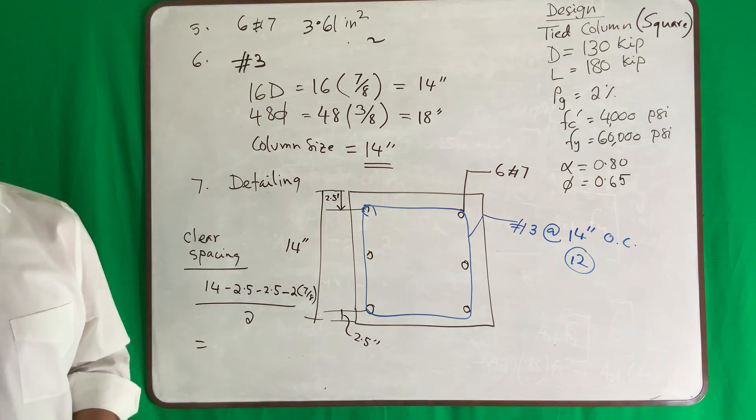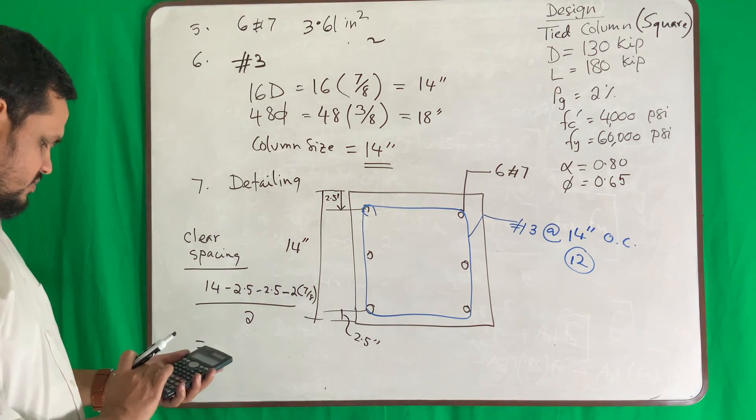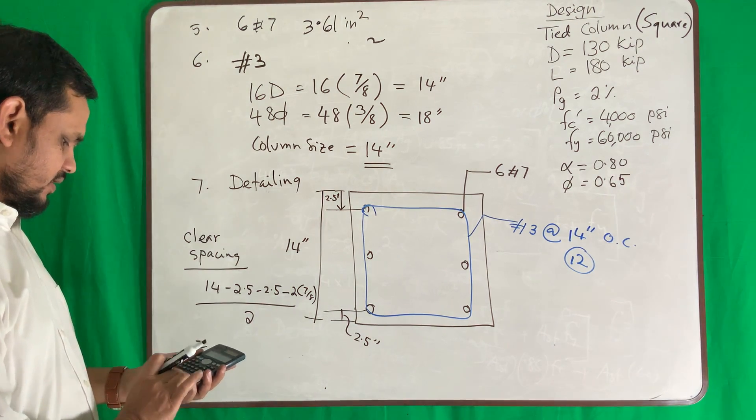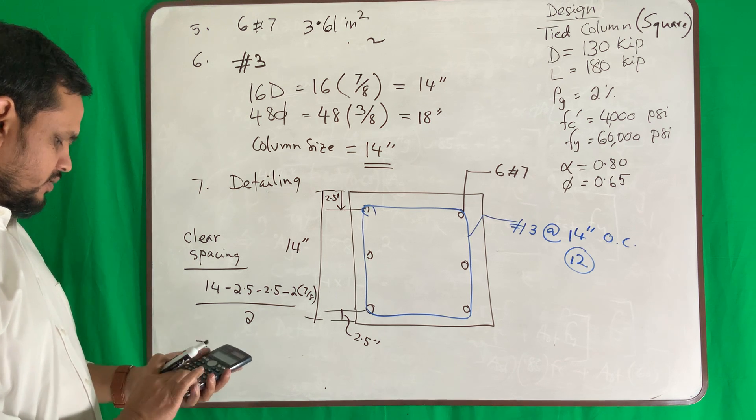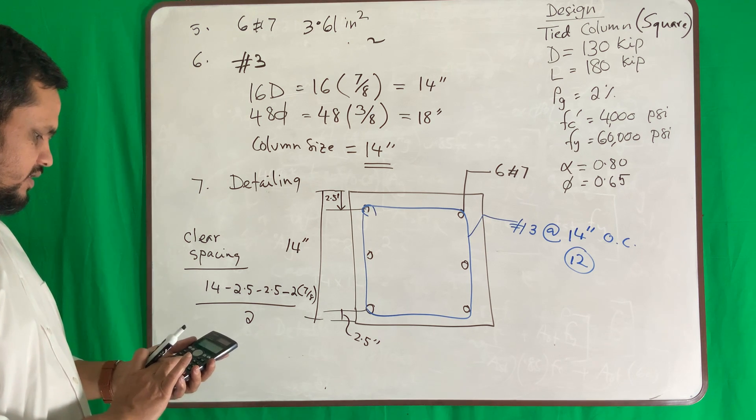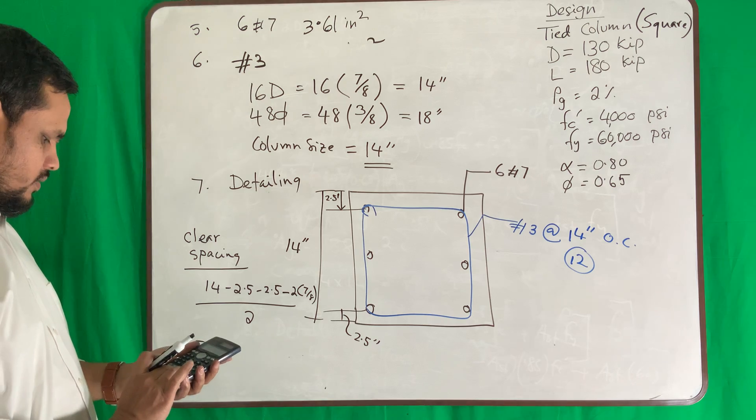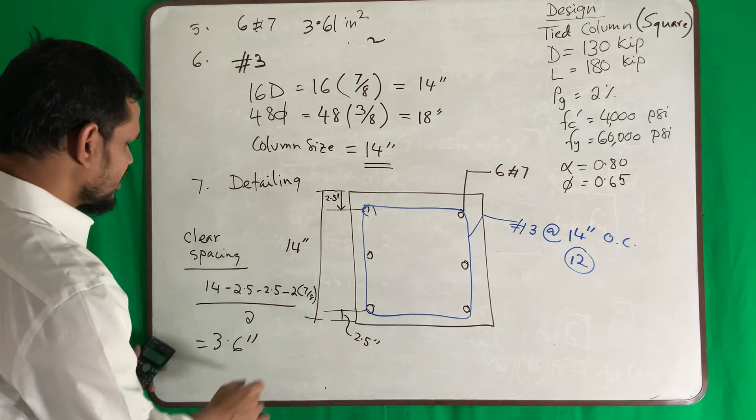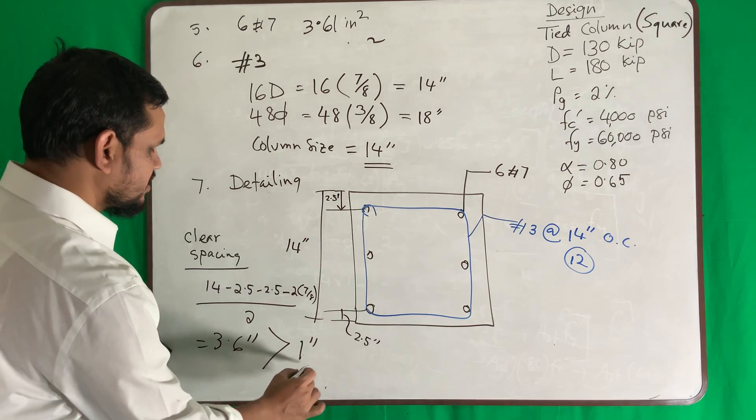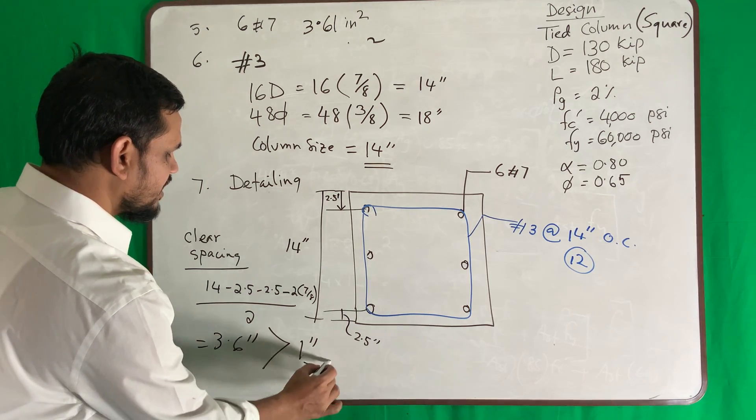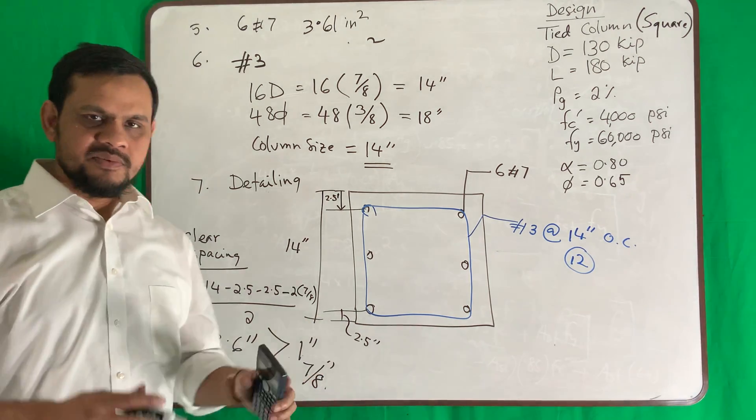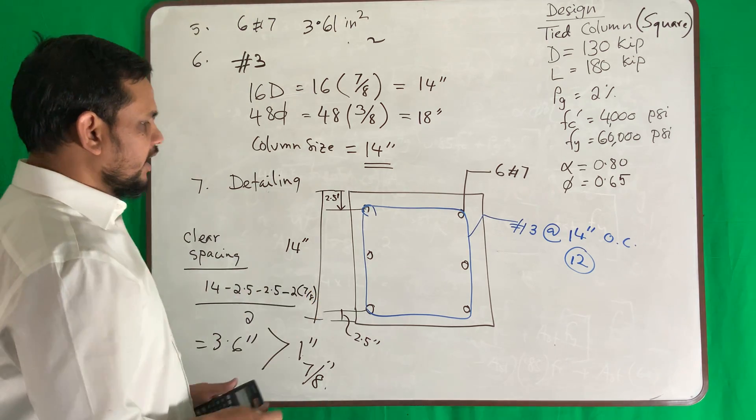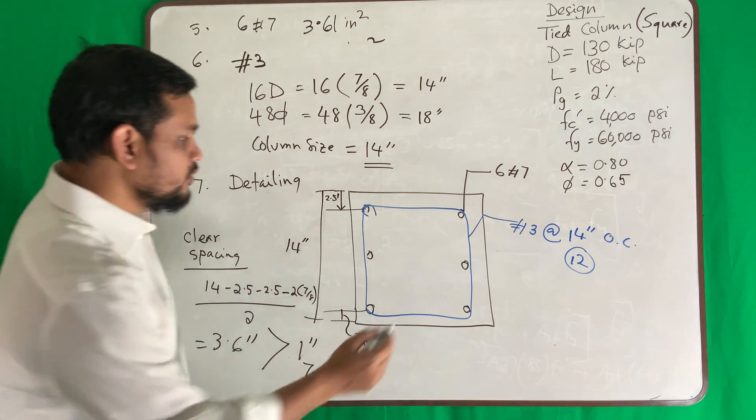Okay should I calculate it? I know it will be okay but I want to make the video length smaller. Difference by 2. There might be some mistake because I am doing very quickly. So 3 inch is more than 1 inch or bar diameter 7/8 inch. So minimum clear spacing is okay.